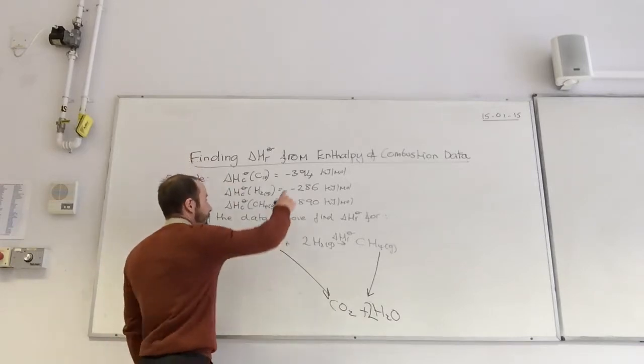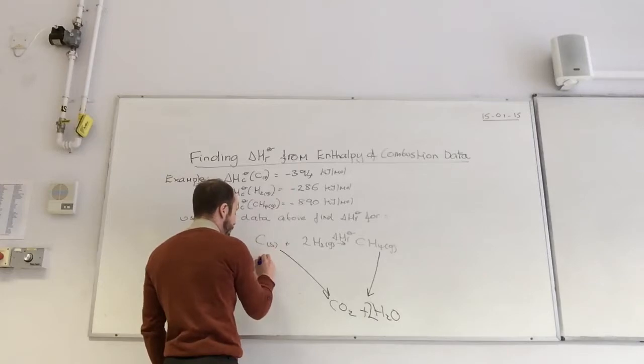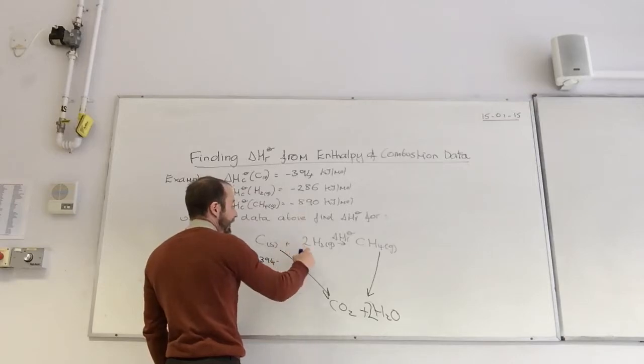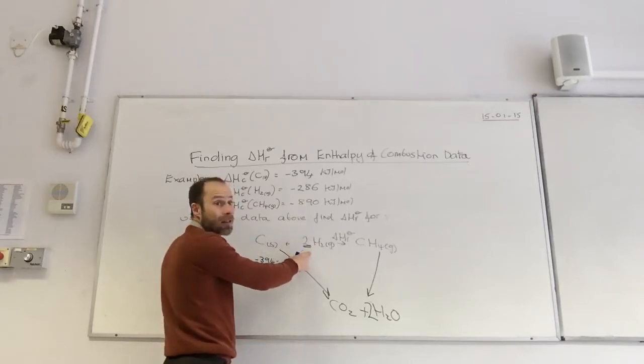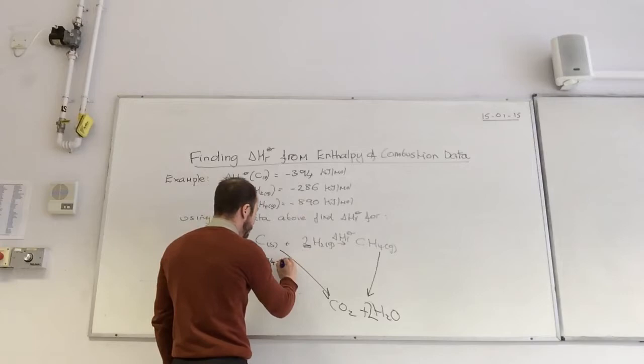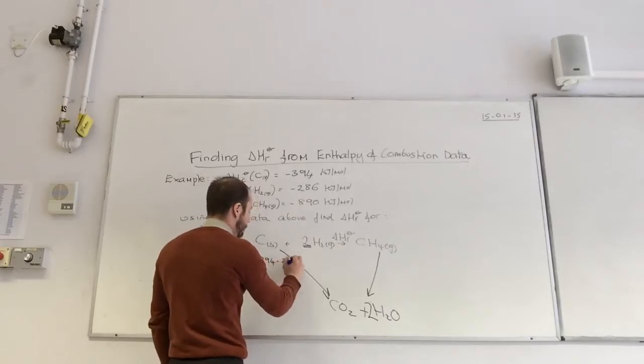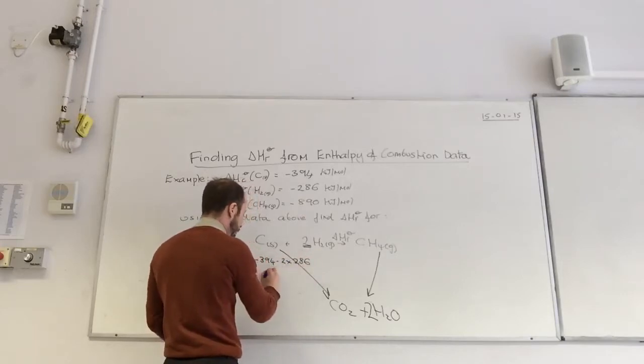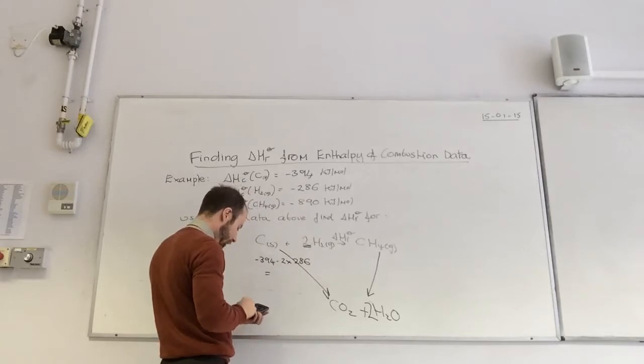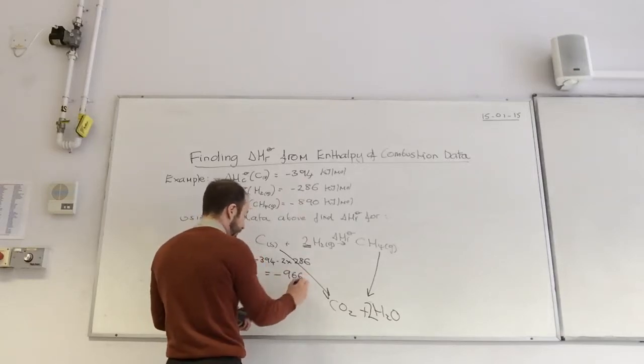Okay. And then you do exactly the same things we've done before. Let's put my values in. Carbon is minus 394. Hydrogen is minus 286, but I've got two of them, so minus 2 times 286. So let's do that, minus 394, minus 2 times 286, comes to minus 966.